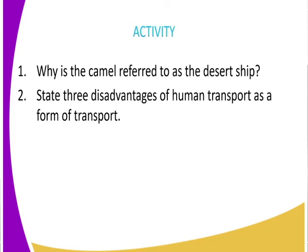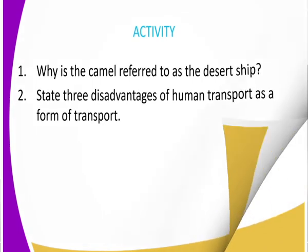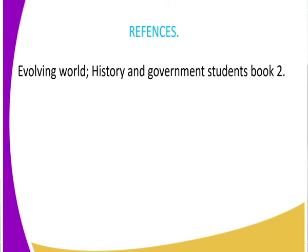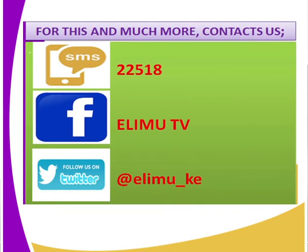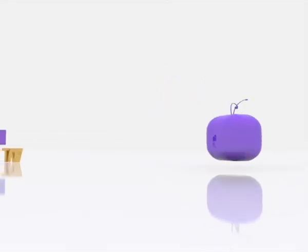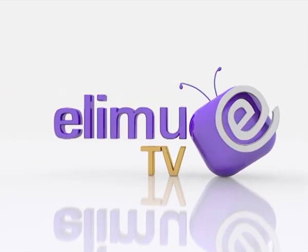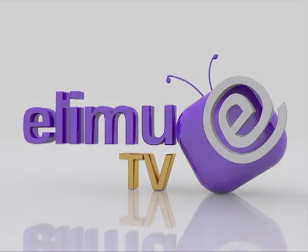To sum up our lesson, let's try some review questions. One: why is the camel referred to as the desert ship? It was mostly used in the desert. Two: state some of the disadvantages of human transport as a form of transport. For your reference, refer to Evolving World: History and Government, Students Book Two. For more lessons, watch Elimu TV on Facebook and Elimu underscore Kenya on Twitter. This is the station where you watch and learn — thank you and see you in the next class.